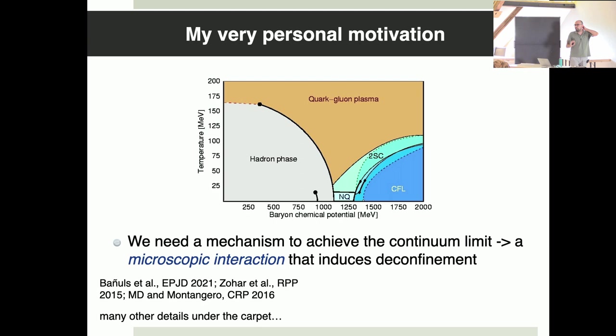This is my personal motivation, which is a history of failures. People that try to study gauge theories in quantum simulators would like to be able to understand something about this: the phase diagram of quantum chromodynamics, the theory believed to describe strong interactions, as a function of temperature and biochemical potential. The early regimes are well understood, the rest is not understood.